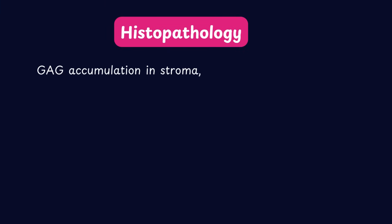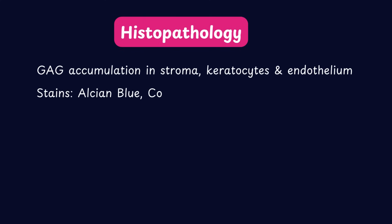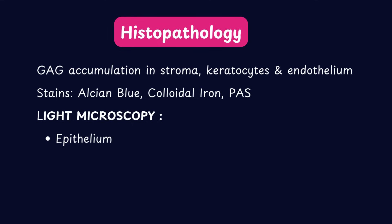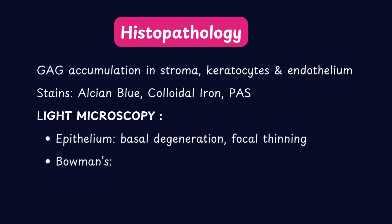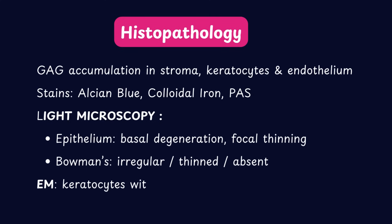The histopathology of macular corneal dystrophy shows abnormal accumulation of glycosaminoglycans. These can be deposited between the stromal lamellae, beneath the epithelium, and also inside both the keratocytes as well as endothelial cells. The abnormal mucopolysaccharides or glycosaminoglycans accumulate both intracellularly as well as extracellularly.